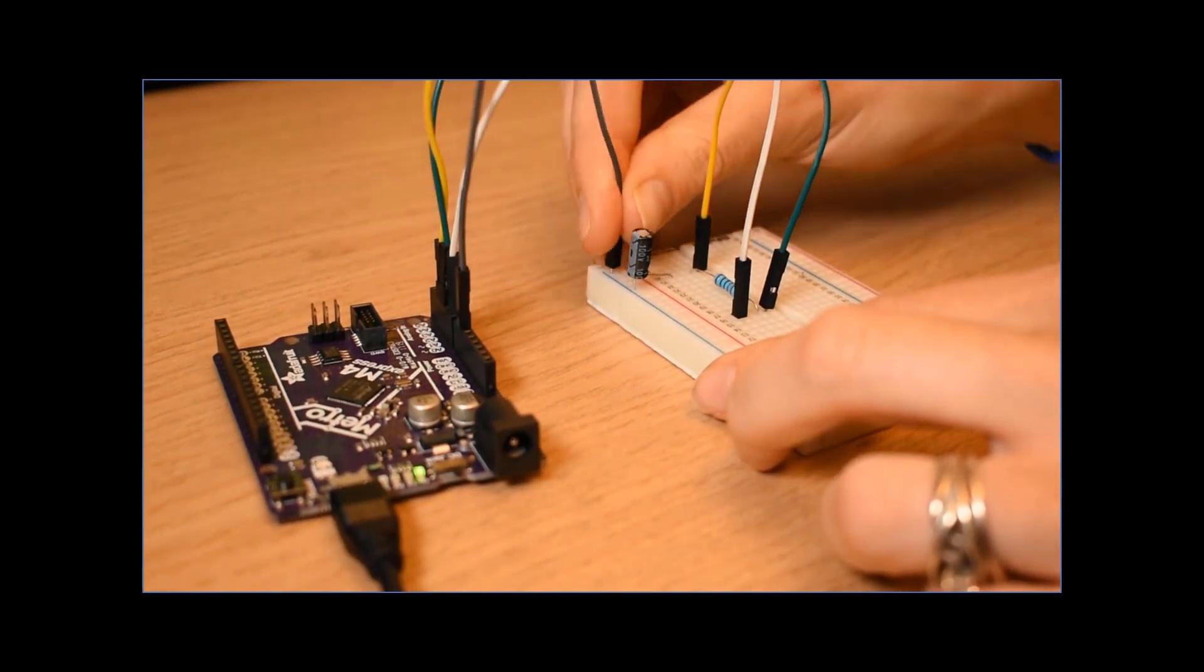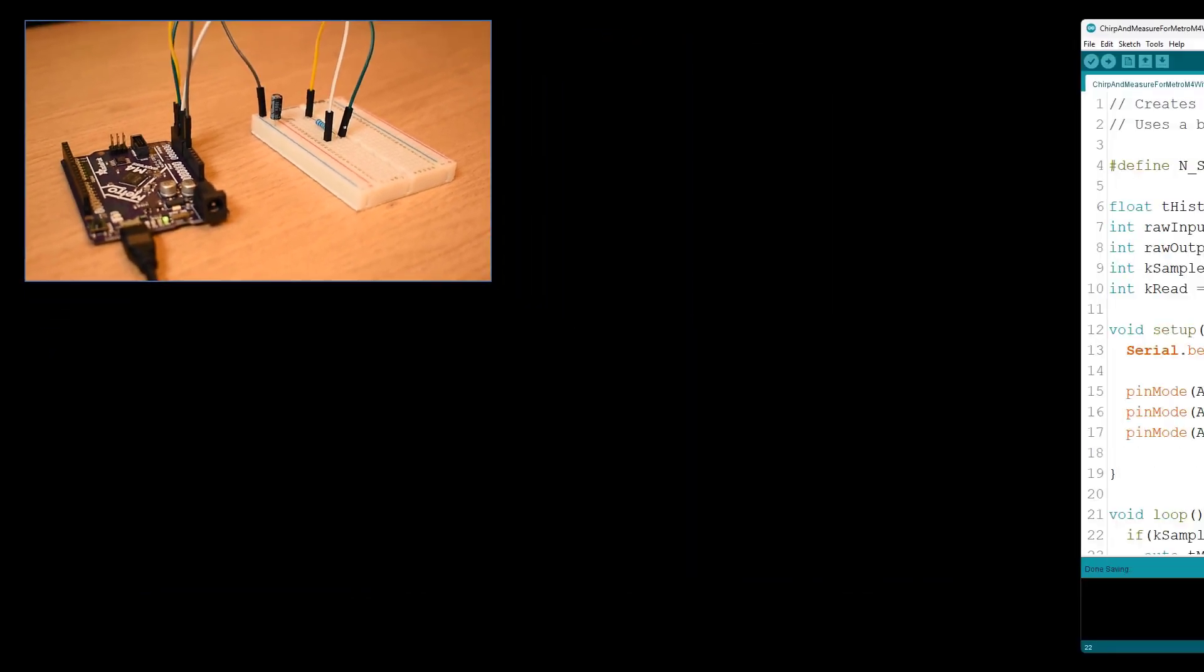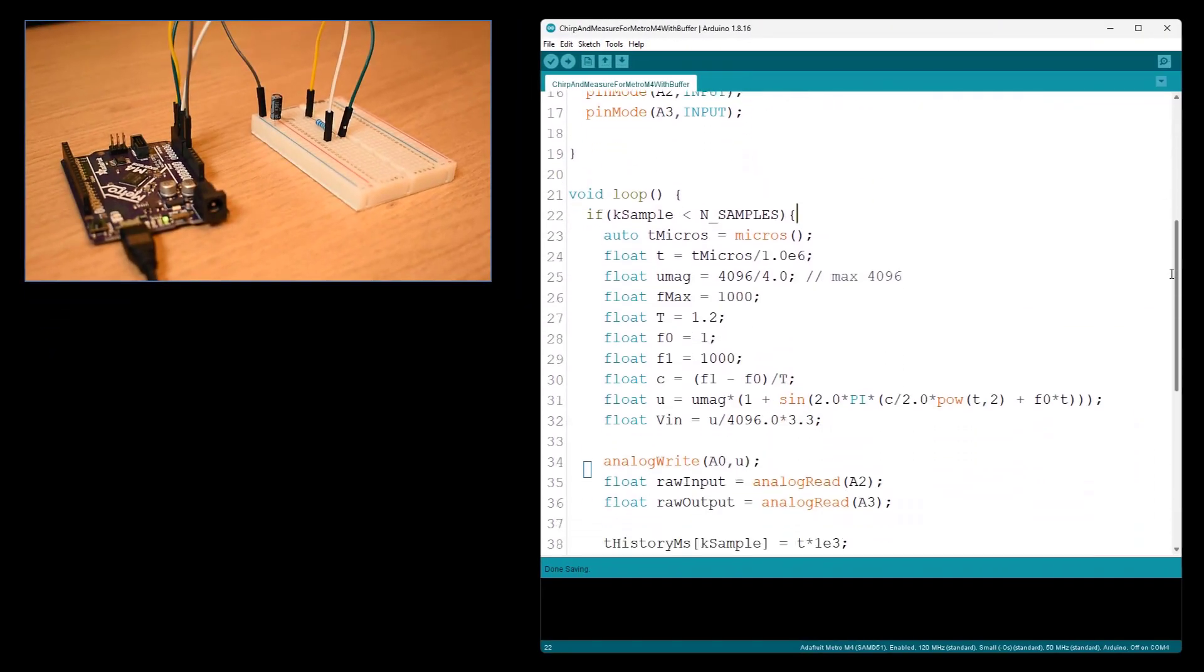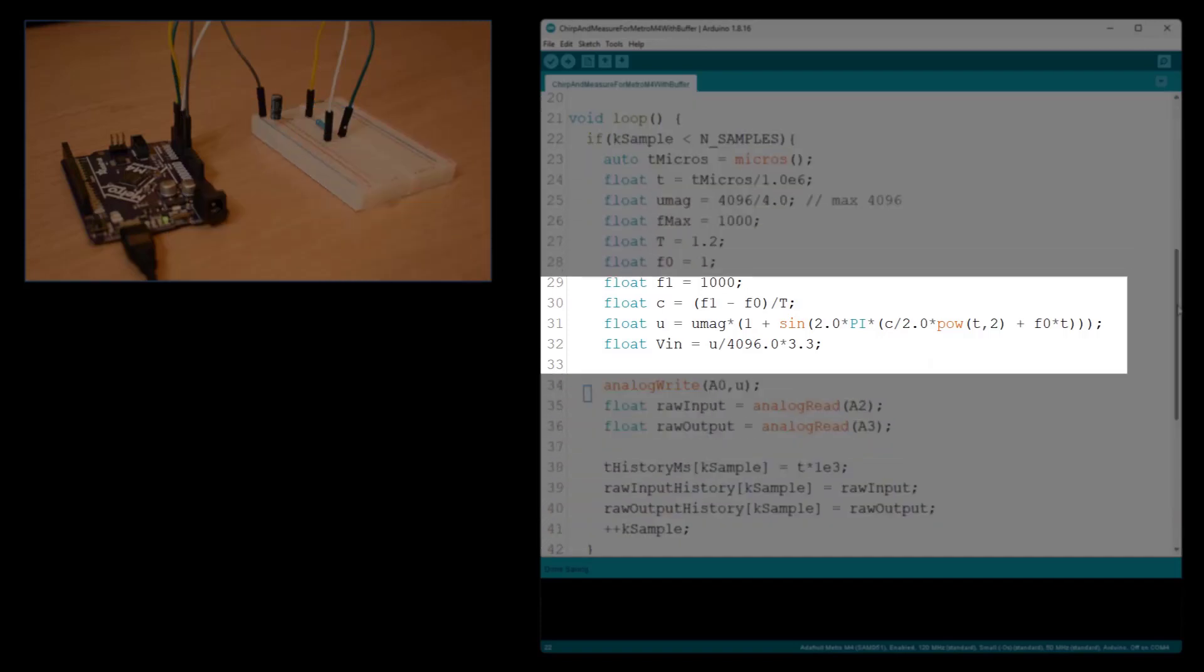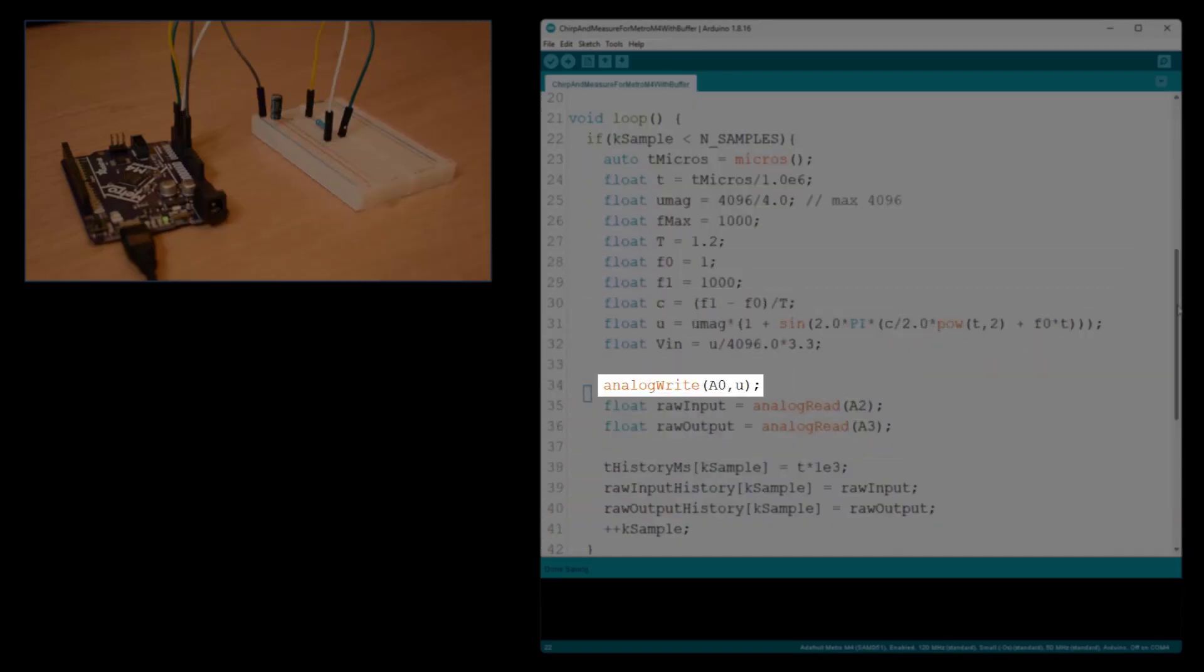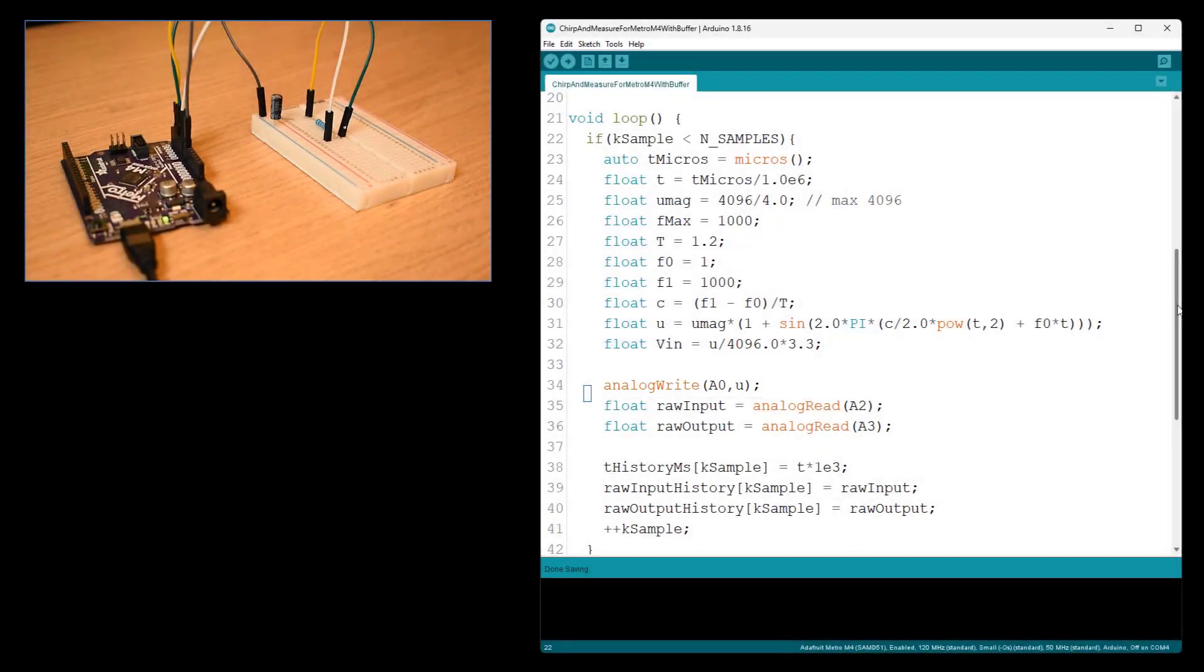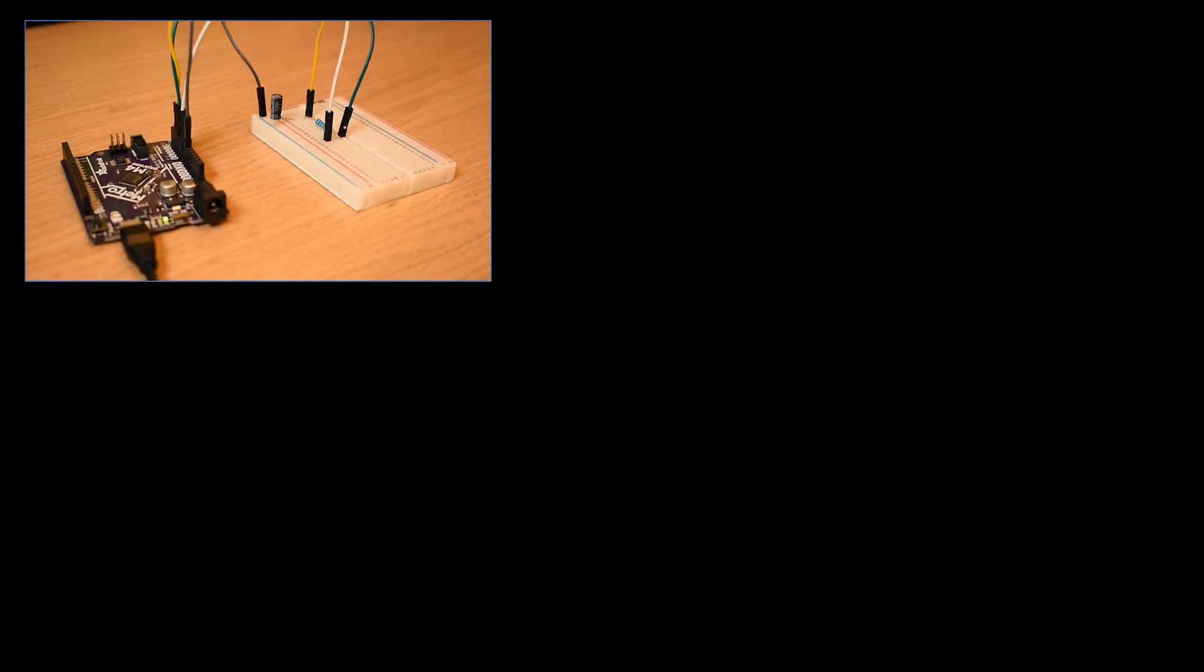Let's try probing the circuit with a chirp signal. I'll generate the chirp in the Arduino IDE. Here's the line where it's computed, and here's where it's written to the digital-to-analog converter.